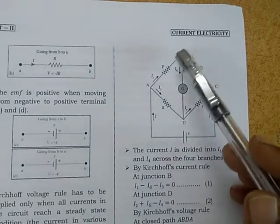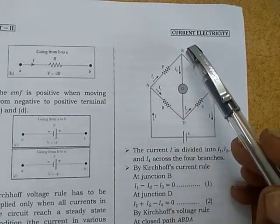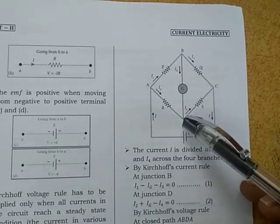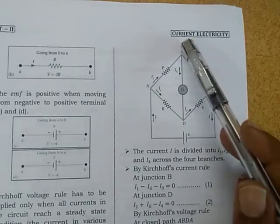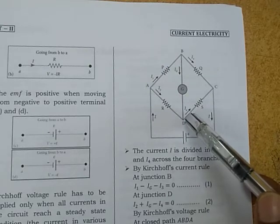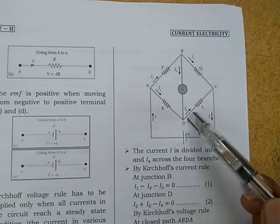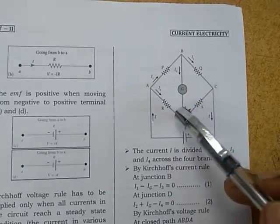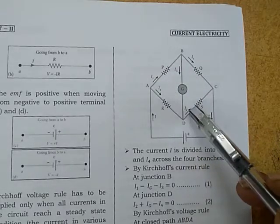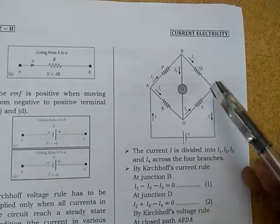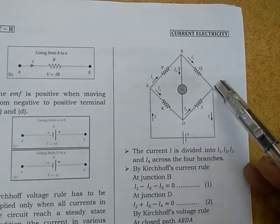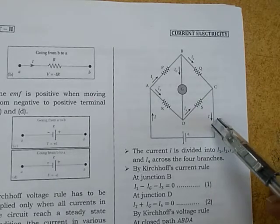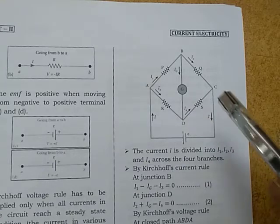The current I₁ splits as Iɢ in branch BD and I₃ in branch BC. Then the current in branch DC is a combination of Iɢ and I₂, that is I₄. Then currents I₃ and I₄ combine at point C and flow back as I.